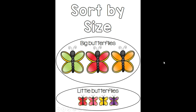On the next page, I have sorted the butterflies by their size. So I made a group of big butterflies and a group of little butterflies. Notice this time that the butterflies do not have to all be the same color. They are different colors, but they are the same size, because we're sorting by size this time.